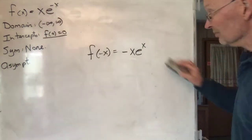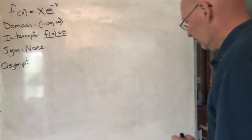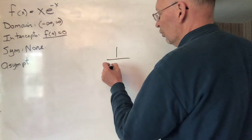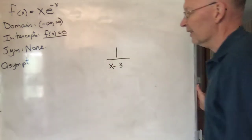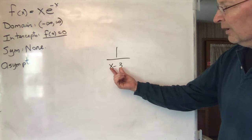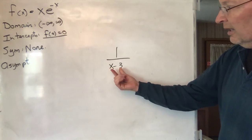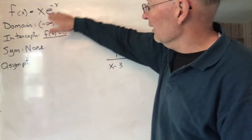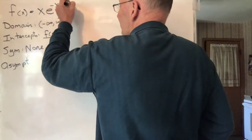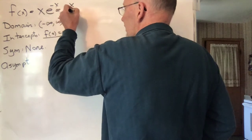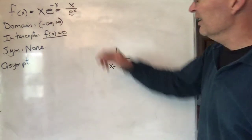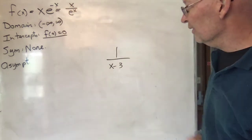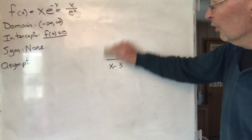Asymptotes: vertical asymptotes occur where the denominator of the function goes to zero, such as x minus three — that would be a vertical asymptote because the bottom goes to zero and the top doesn't. There's no denominator here, but you could write this as x over e^x. Notice there's no place where e^x hits zero, so there are no vertical asymptotes.